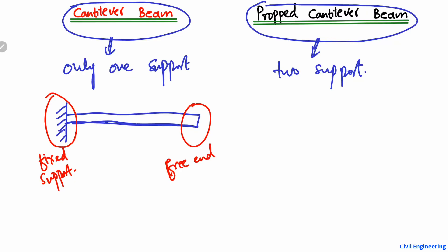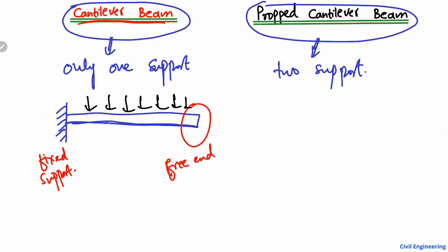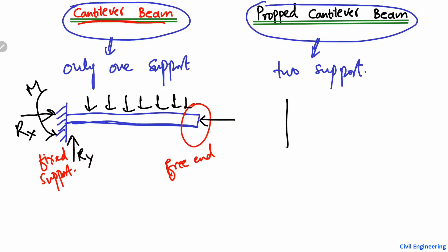This type of beam is known as the cantilever beam. When a load is acting on the beam — for example, a vertical load — the whole reaction is taken by only this one support Ry. Similarly, when a horizontal load is acting on the beam, only this support can take the horizontal load. The moment will also be taken by this support M. So it can take all three reactions at one end.